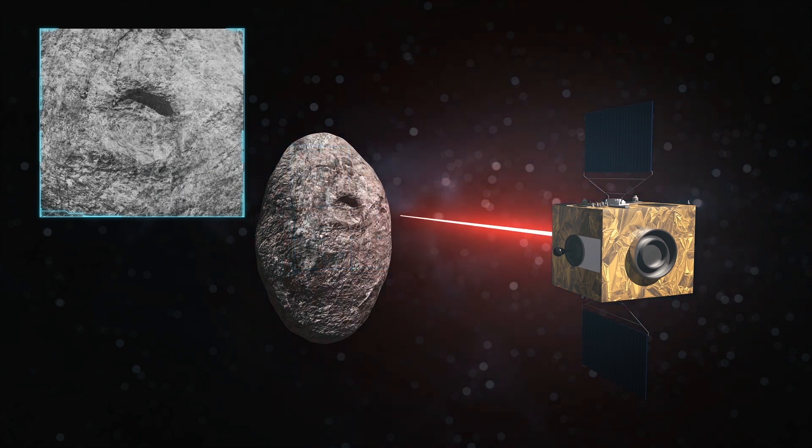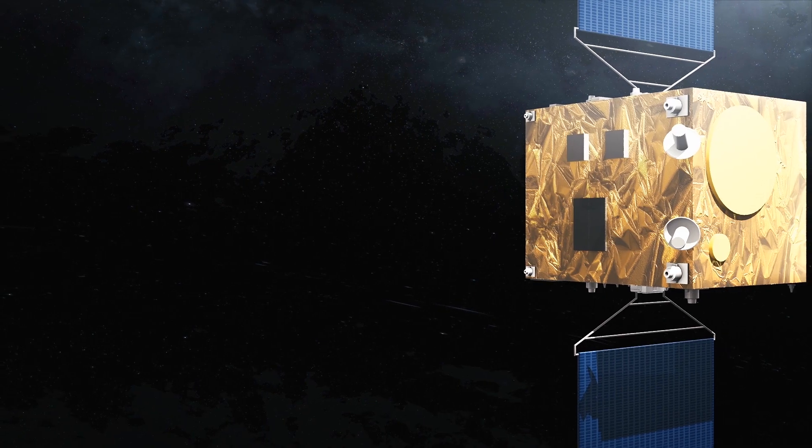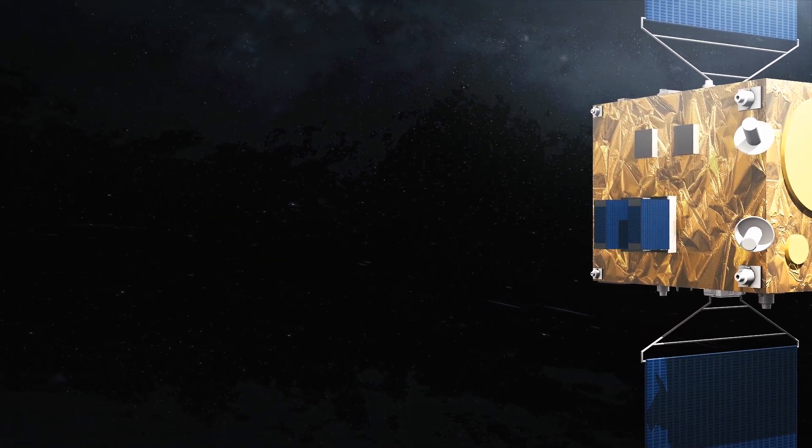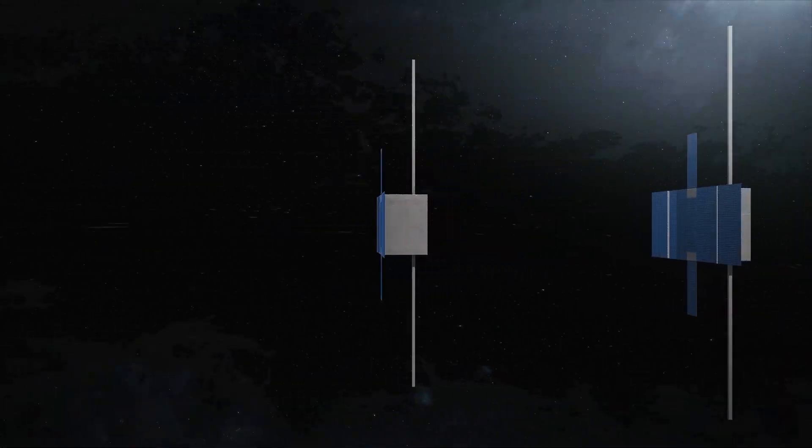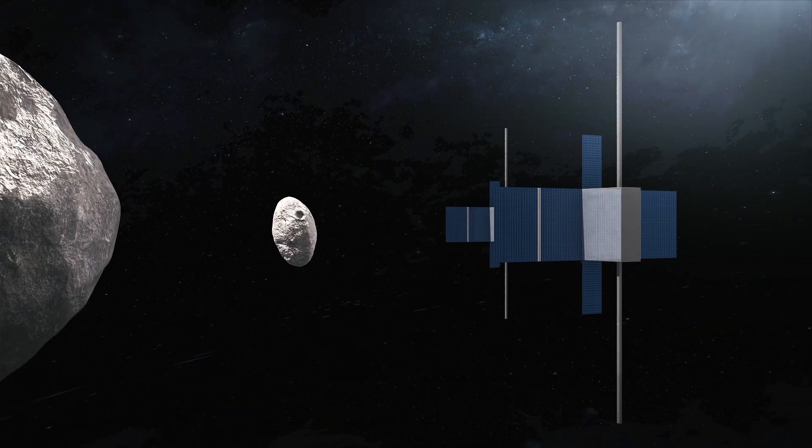The desk-sized spacecraft will map the impact crater left by DART and measure the mass of Dimorphos. It will then deploy two briefcase-sized CubeSats that will fly closer to Dimorphos to conduct further scans. One of these will land on the asteroid for several days of surface operations.